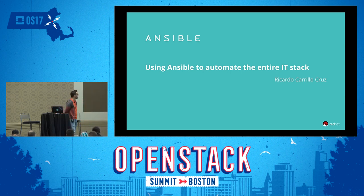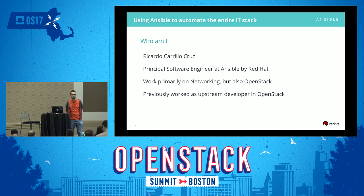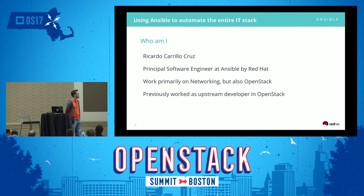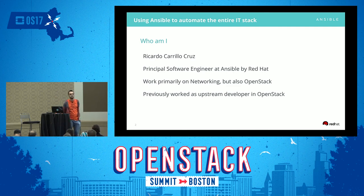The title of this session is "Using Ansible to Automate the Entire IT Stack." I'm Ricardo Guerrero Cruz, although you can just call me Ricky. I joined Ansible by Red Hat recently, which I'm very excited about. I work primarily on Ansible Networking — I personally own the Cisco modules for routers, OpenSwitch, and a bunch of other stuff. I'm also a maintainer of the Ansible OpenStack modules, along with Monty, Jesse, Julia, David, and others. I previously worked as an AppStream developer in OpenStack and I'm part of the OpenStack Infra team.